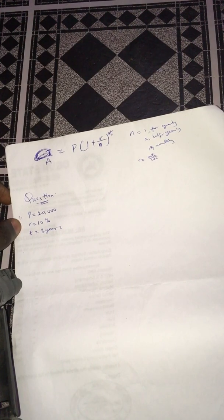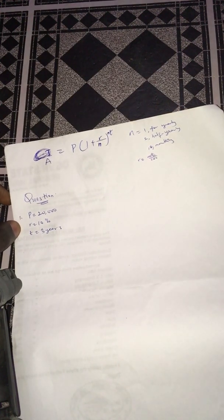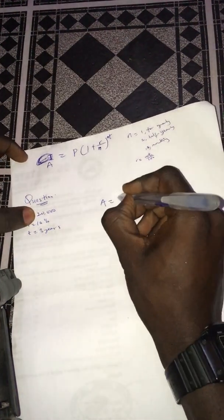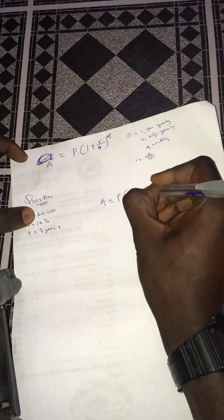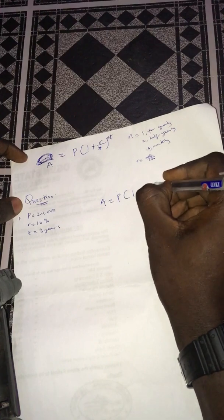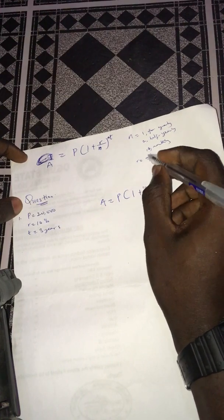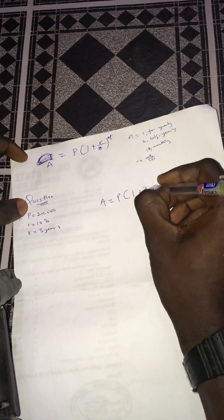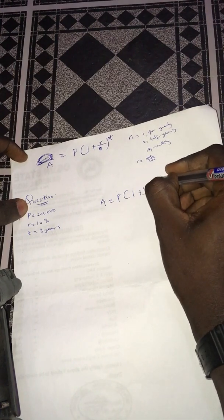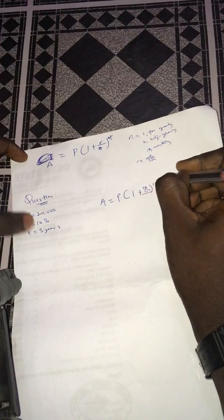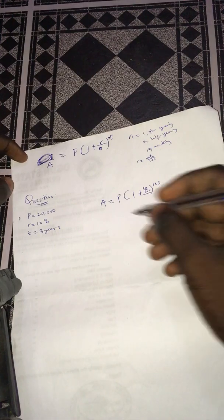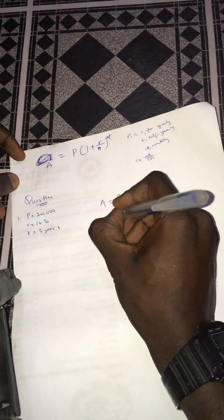Now, if you have to do that manually, all you have to do is A = P(1 + r), which is 10%, so 10 over 100, over n. Our n is yearly so it's 1, so we're going to ignore that. That's 10 over 100 raised to power n times t, which is 3. Our P is 20,000.